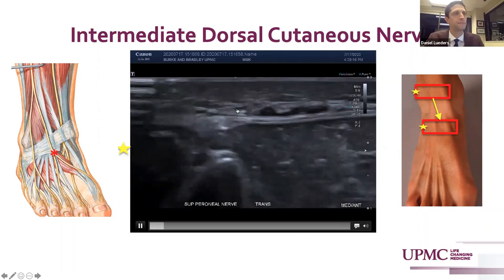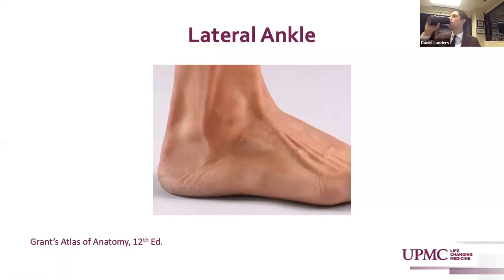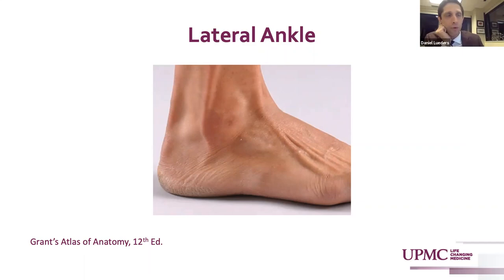Moving down to the lateral ankle. The lateral ankle can be evaluated with the patient in a lateral recumbent position on the opposite side so that the ankle of interest faces upward toward the ceiling. Its prominent structures are the fibularis or peroneus tendons — the longus and brevis — the anterior talofibular ligament, the calcaneofibular ligament, and the posterior talofibular ligament, which form the lateral ankle stabilizers, as well as evaluating the posterior subtalar joint and the sural nerve.